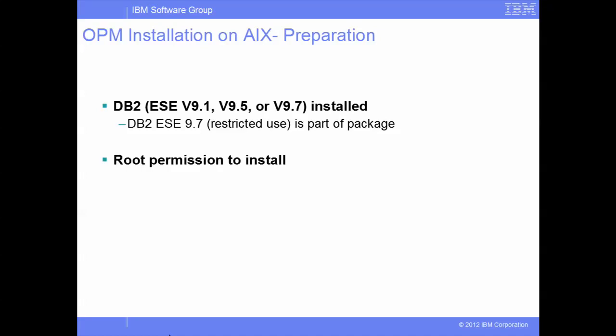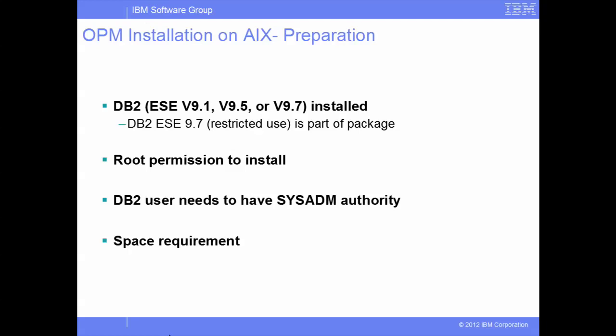Second, root permission is required to install. Third, a DB2 user ID with sysadm authority is needed during the installation to access the repository database and repository server. Fourth, about 550 MB of disk space is required to store the full set of recommended downloadable parts and 1.5 GB of temporary space to run the installation program. The root user who installs the product must have read, write, and execute authorities on /tmp for Unix or C:\temp for Windows.